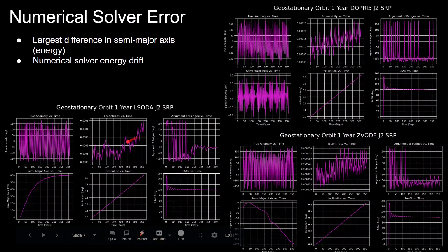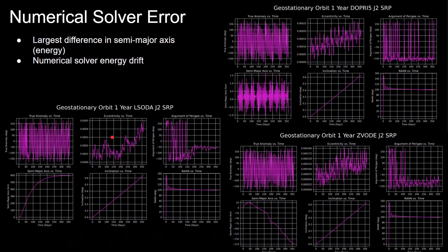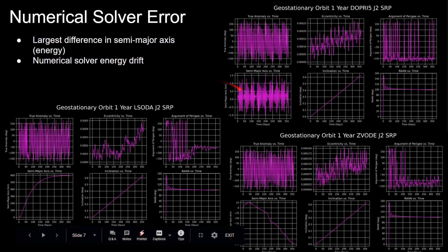In my mind, it doesn't make sense that the semi-major axis would increase for a bit and then decrease secularly for the rest of the year in the Zvode case. It also doesn't make sense to me that the semi-major axis would increase, but at a slowing rate, which doesn't really make much sense because the geostationary orbit is circular and the moon's orbit is roughly circular.